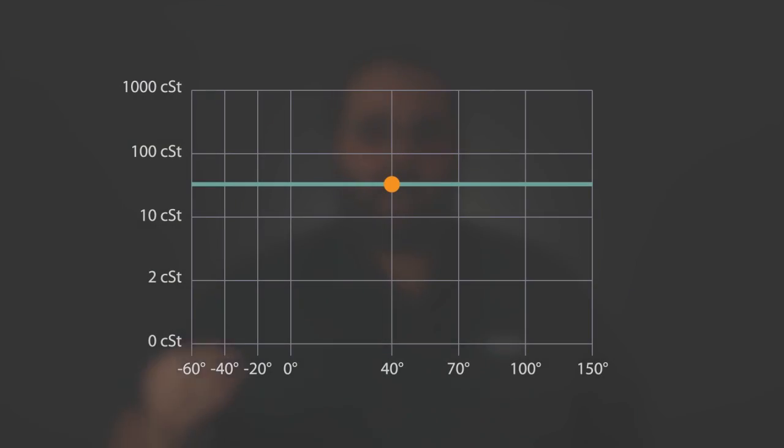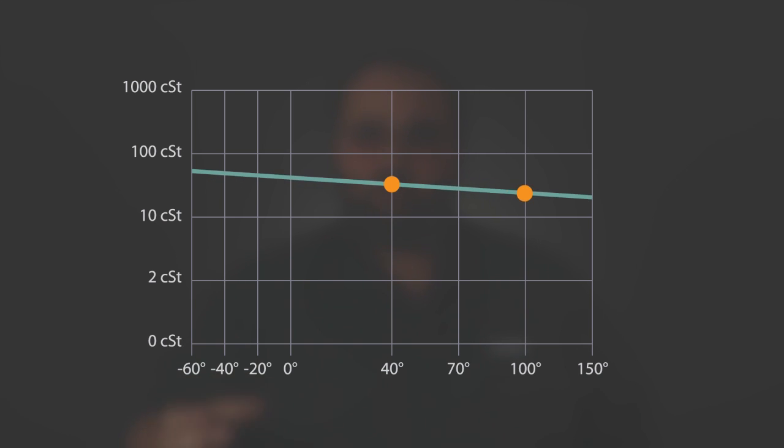However, most of our machines don't run at 40 degrees C, which is right around 100 degrees Fahrenheit. Most of them run hotter than that, and that's why it becomes important to look at that higher temperature, or that 100 degrees Celsius viscosity.